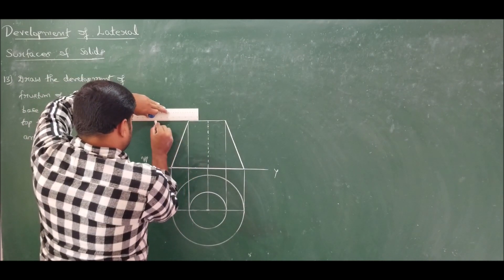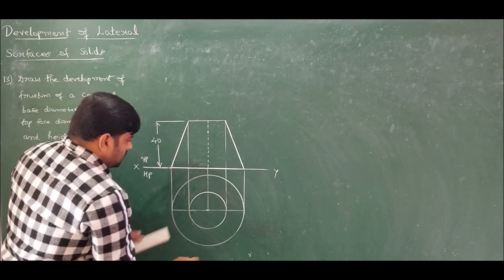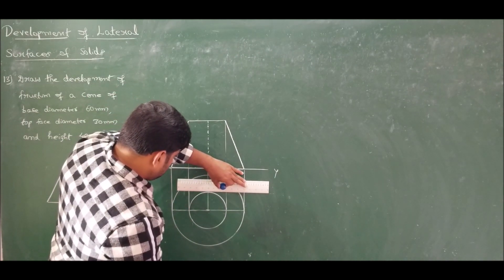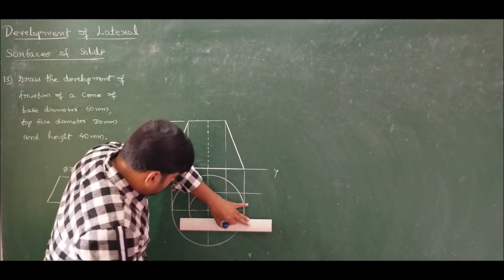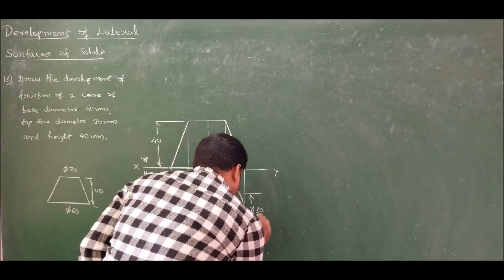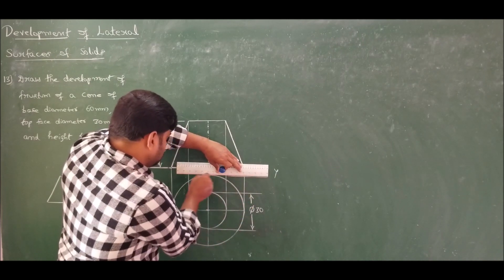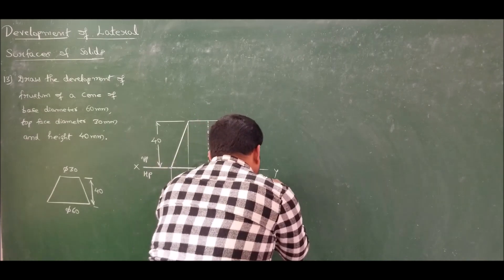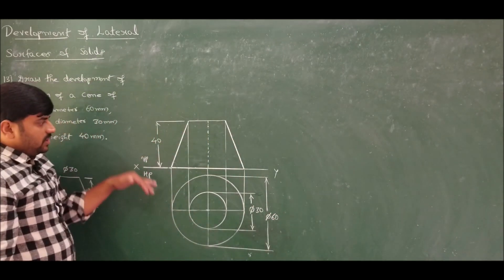The height of the frustum is specified as 40 mm. Let us mark the dimensions: at the top face the diameter is 30 mm, and at the bottom face the diameter is 60 mm. This completes the front and top view of the given problem.